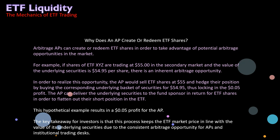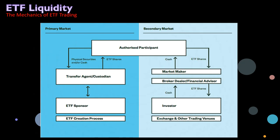The AP can deliver the underlying securities to the fund sponsor in return for ETF shares in order to flatten out their short positions in the ETF — and that explains a lot about the shorting of ETFs. This hypothetical example results in a $0.05 profit for the authorized participant. The key takeaway for investors is that this process keeps the ETF market price in line with the value of its underlying securities, due to the consistent arbitrage opportunity for APs and institutional trading desks.